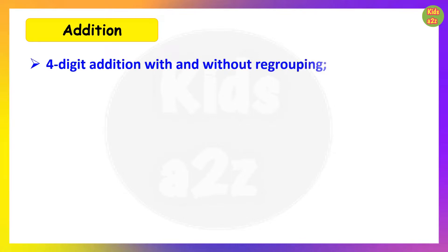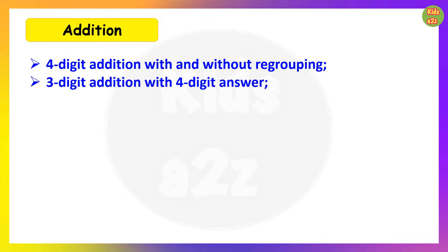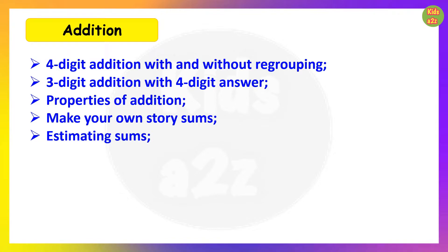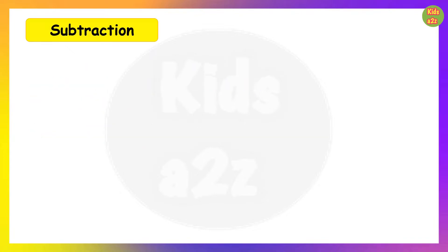The second chapter is Addition. Here they will learn four digit addition with and without regrouping, three digit addition with a four digit answer, properties of addition — that means order property, grouping property and zero property — make your own story sums where they will learn to frame addition word problems on their own, and estimating sums, that means estimating the sum of up to four digit numbers by rounding.